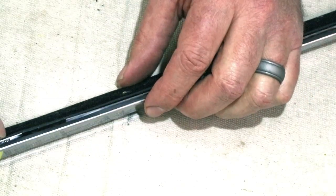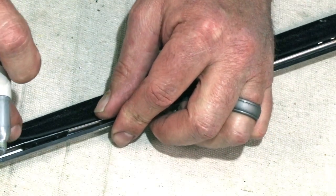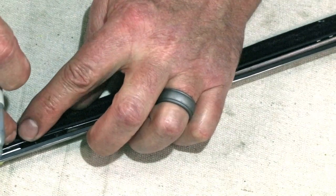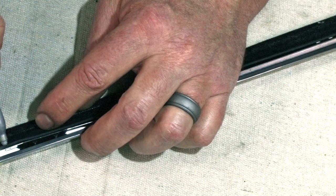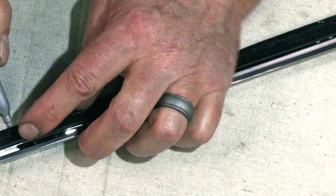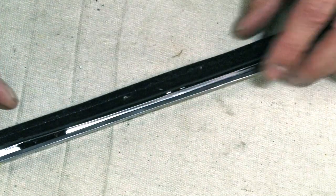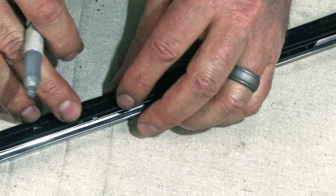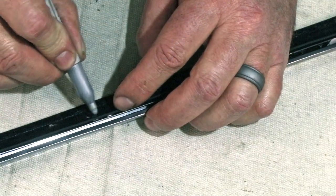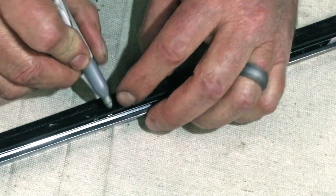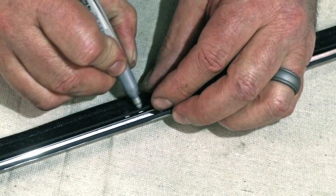Now the holes for our staples, we can't see them now, so we are going to mark them with a silver marker on our rubber strip. So when we replace the metal retainer over the top of it, we will be able to see where to puncture the holes for the staples.